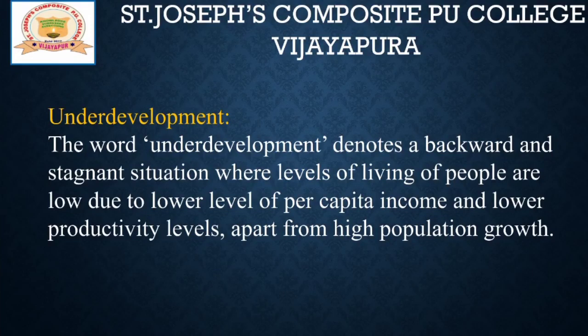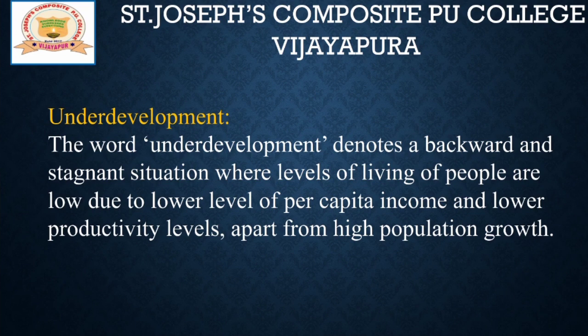What do you understand about underdevelopment? The word underdevelopment denotes a backward and stagnant situation. This backward and stagnant situation arises due to high population — overpopulation leads to many problems, resulting in low per capita income and low productivity. As a result, the country remains underdeveloped, with people living at a low level due to lower per capita income, lower productivity, and high population growth.